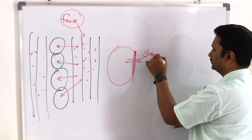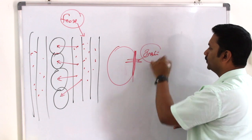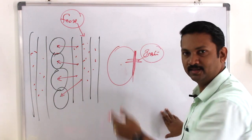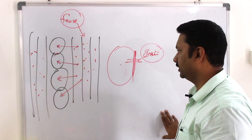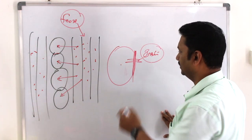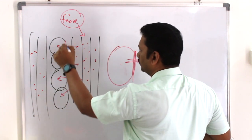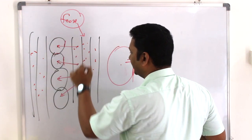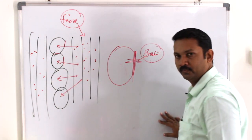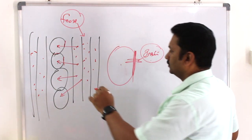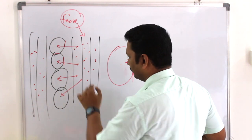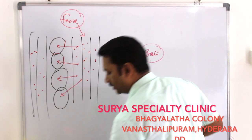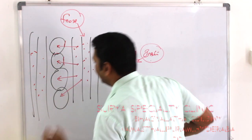This is insulin. Insulin will be released. Food will be processed and broken down here. Food will be metabolized in the cell, and the cell can be damaged if this process is disrupted.